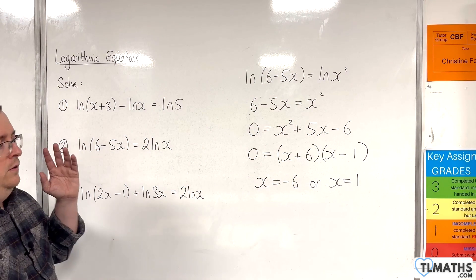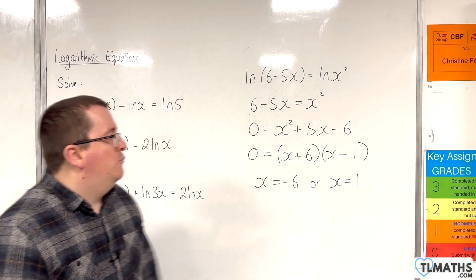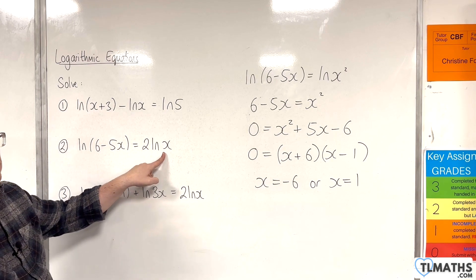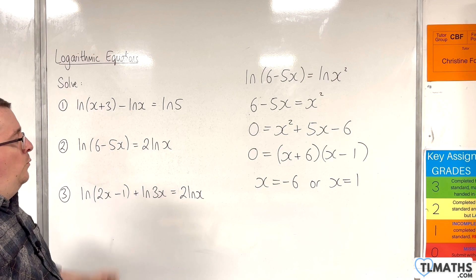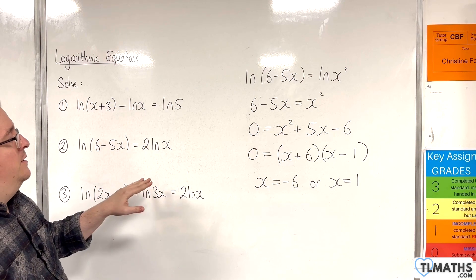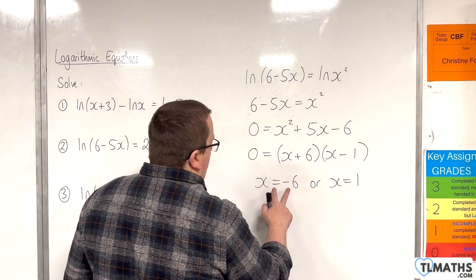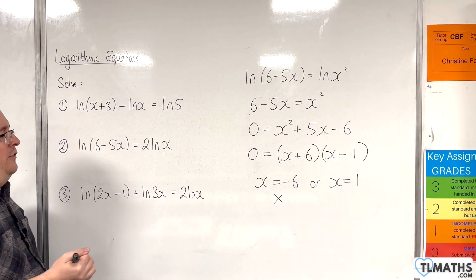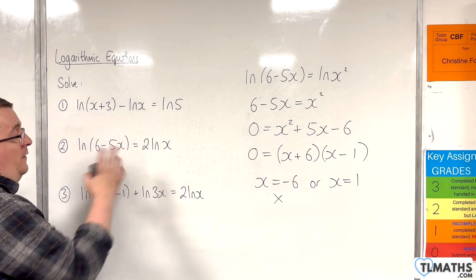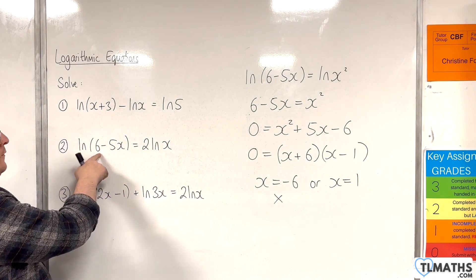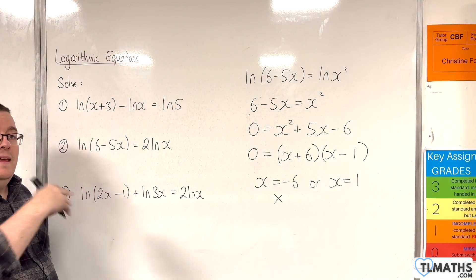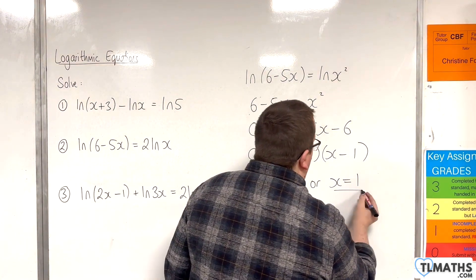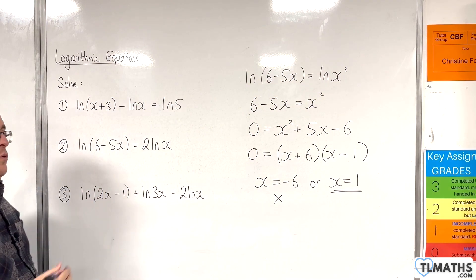Now check: do both of those solve the original equation? With x equals minus 6 we would have the natural log of minus 6, which is undefined, so that is not a solution. With x equals 1, log of 1 is fine, and log of 6 take away 5 is log of 1, which is also fine. So x equals 1 is the only solution to the original equation.